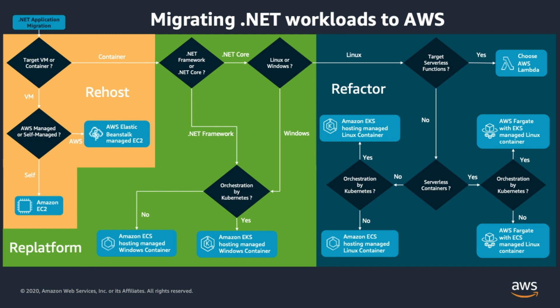To summarize the options available to host .NET web applications on AWS: Amazon EC2 offers the most flexibility to manage your environment, whereas AWS Elastic Beanstalk offers a managed service. For .NET Framework on Windows Containers, you can choose between ECS or EKS. For .NET Core, you have serverless functions on AWS Lambda, or Linux and Windows containers on EKS and ECS. For Linux-based containers, we offer AWS Fargate, our serverless compute engine for containers. Thank you.